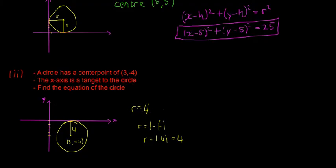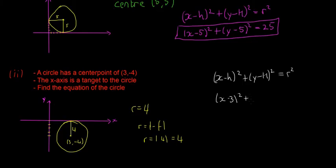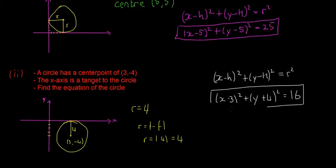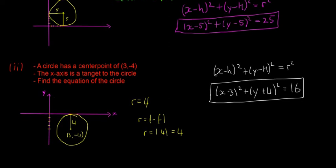So we can write the equation of the circle. The equation is x minus h squared plus y minus k squared is equal to r squared, where h and k are the center of the circle. That means we get x minus 3 squared plus y plus 4 squared is equal to 16. Drawing a sketch is probably an easier way to find the radius rather than trying to remember a formula.